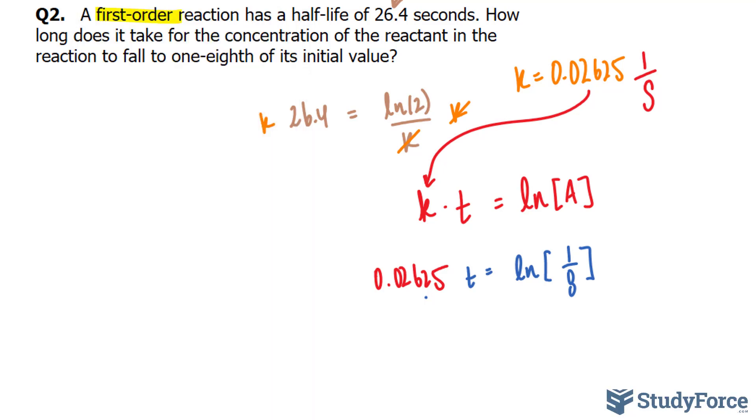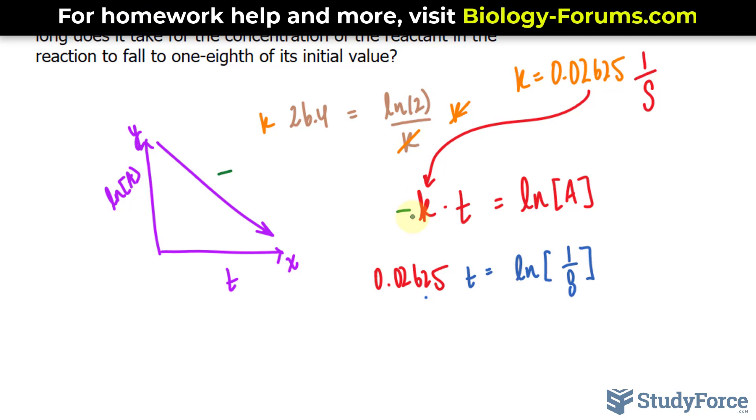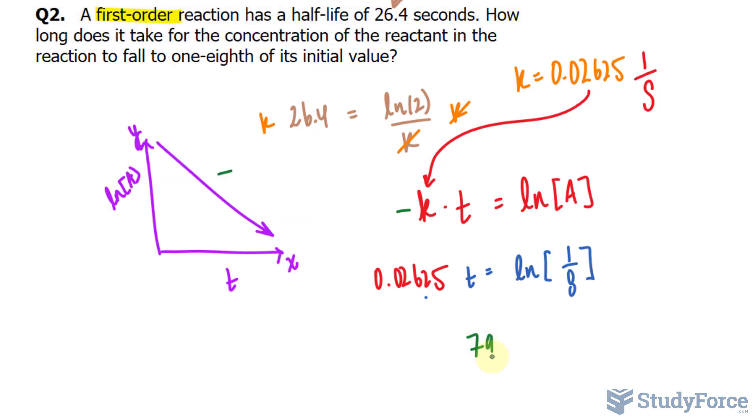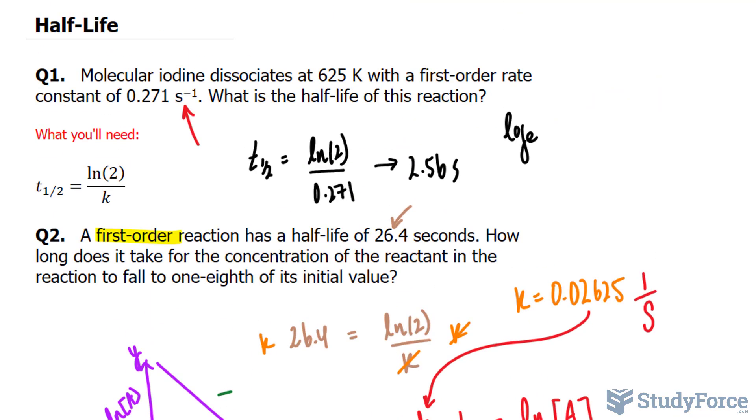The reason why is because when you actually graph a first order reaction, the graph, this being the y and x-axis, so this would be the ln of the concentration and this would be the time, the graph would actually be going downwards. So the slope is always negative. And I omitted that here. But this should actually be negative K and by putting it as negative K, you wouldn't have run into this issue in the first place. So let's write down 79.2 seconds. It takes 79.2 seconds for this reaction to go down to one-eighth of its original. And there you have it. That is how to solve half-life problems related to reaction rates.